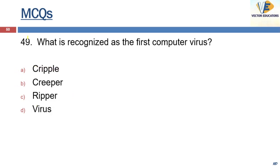What is recognized as the first computer virus? The answer is Creeper. In 1971, Creeper was created as an experimental self-duplication program.